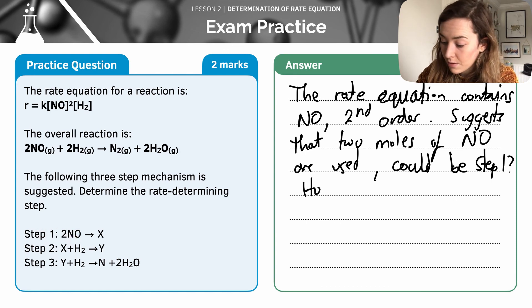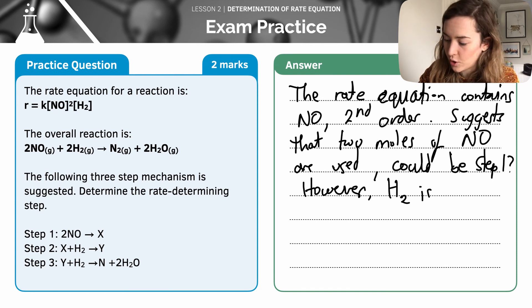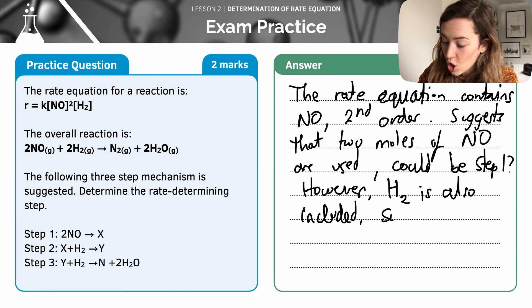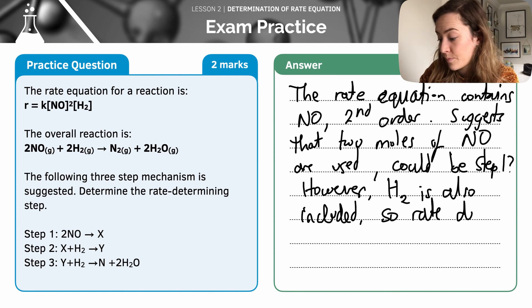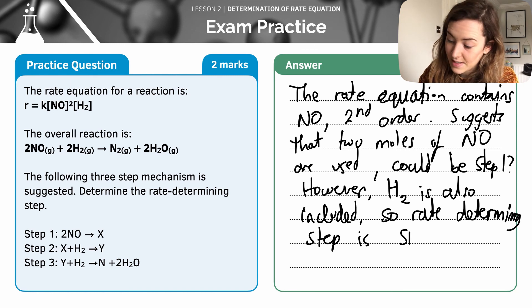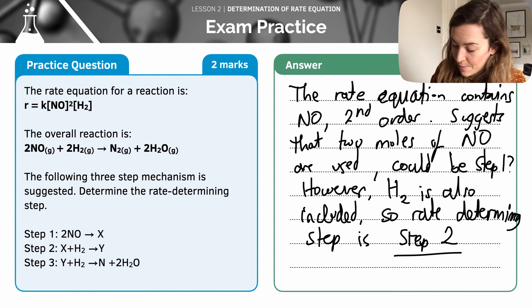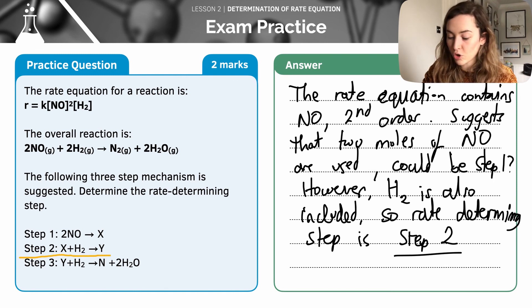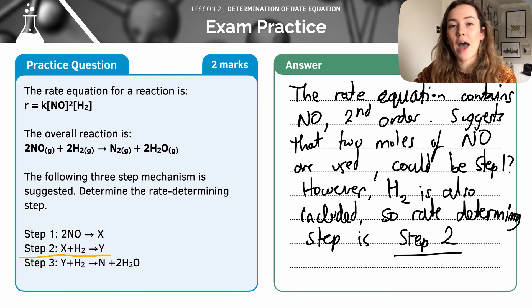However, H2 is also included in the rate equation. So the rate determining step is step 2, because we have the products that involve the two moles of NO being needed, and it also includes our H2.